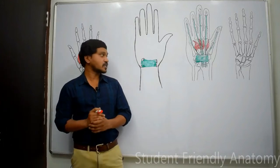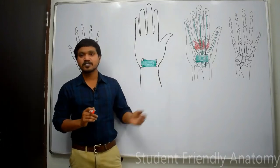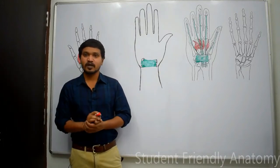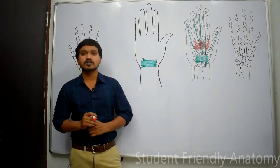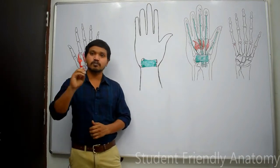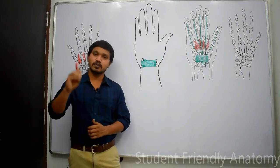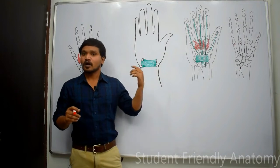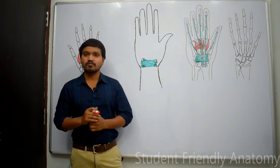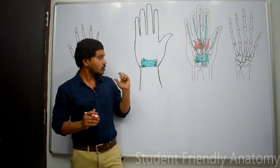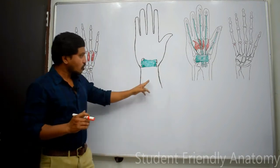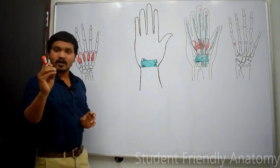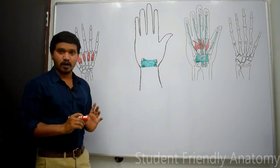In this session, we will discuss arteries of the palm — specifically the superficial palmar arch and deep palmar arch. Before going into details about the arterial arches of the palm, let me tell you about the course and relations of the ulnar artery and radial artery in the palm.